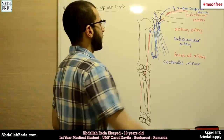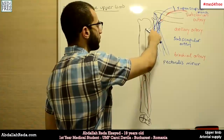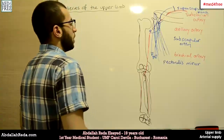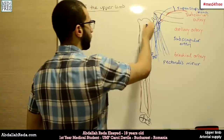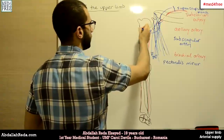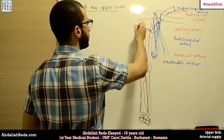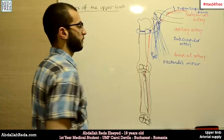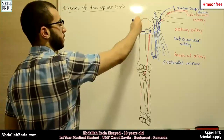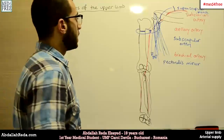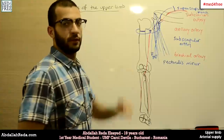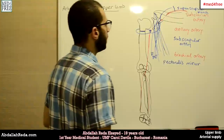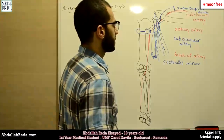From the retropectoral region — the region after the pectoralis minor — we have two branches, and they form a circle around the surgical neck of the humerus. We have a posterior circumflex artery and an anterior circumflex artery, so they form kind of a circle around the surgical neck of the humerus to participate in the formation of the arterial network at that point. That's it for the axillary artery.